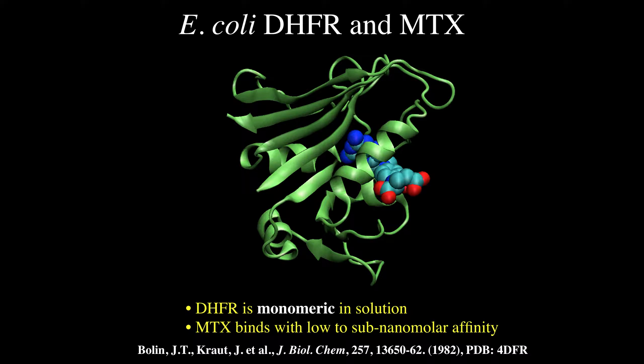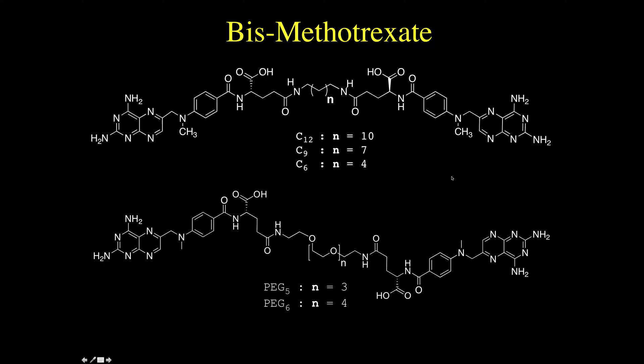This project began with an undergraduate, Aaron Cantor. The question was: can we build small molecules that would bring proteins together and allow us to assemble structures? One of the proteins we found was dihydrofolate reductase, or DHFR. This is a crystal structure showing it bound to the small molecule methotrexate, which is an anti-cancer drug. We noticed that methotrexate binds with high affinity and its tail is solvent-exposed.